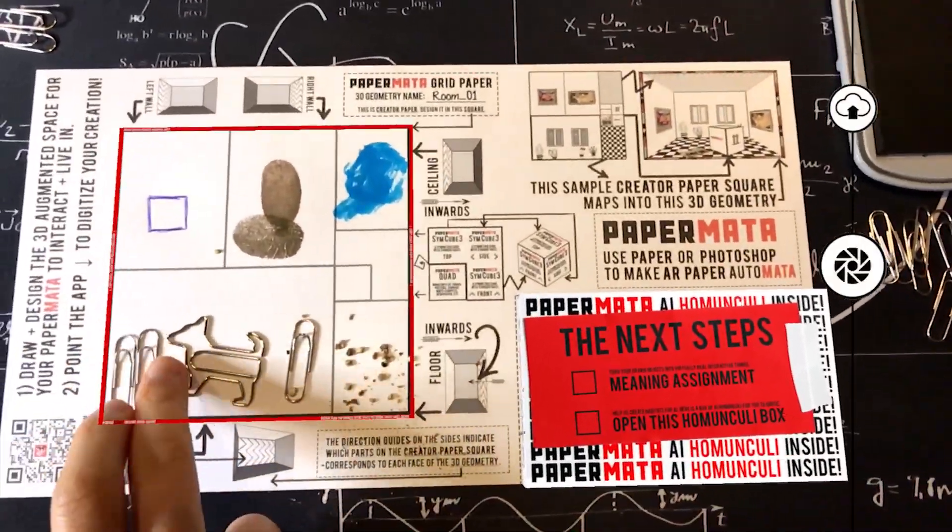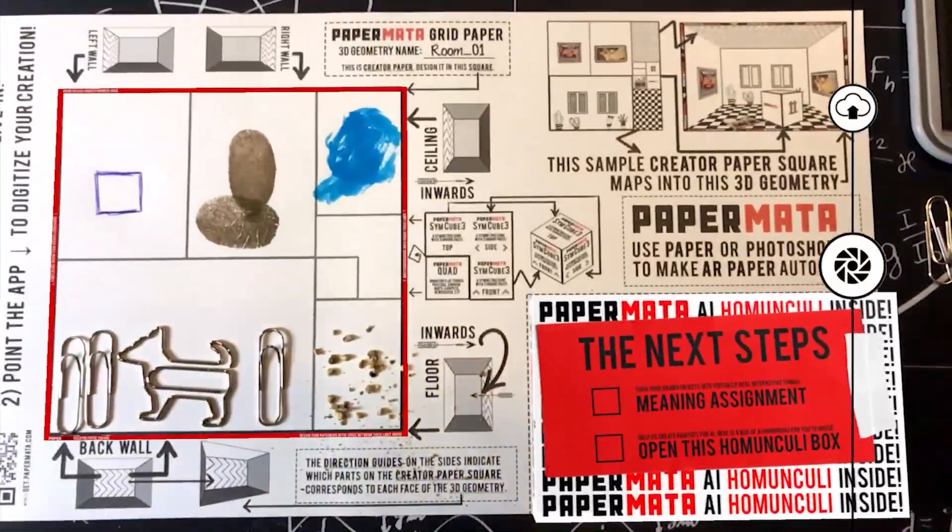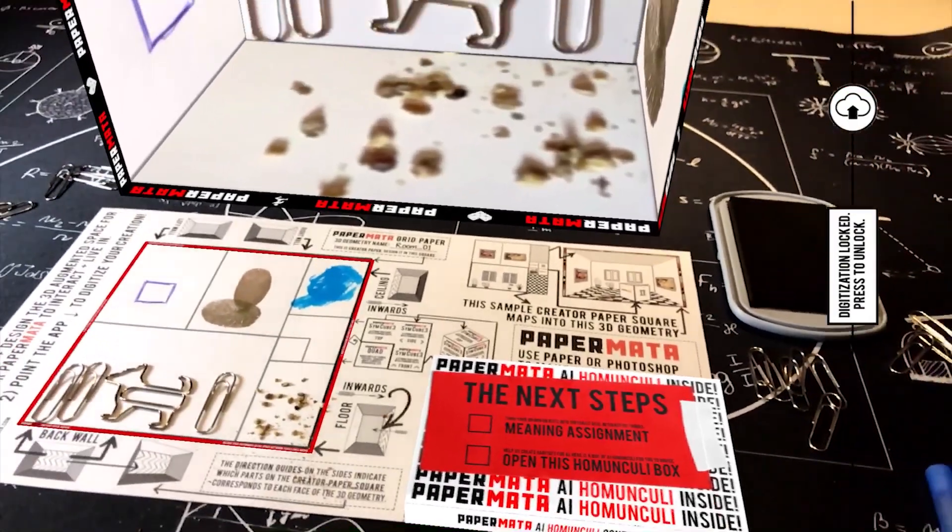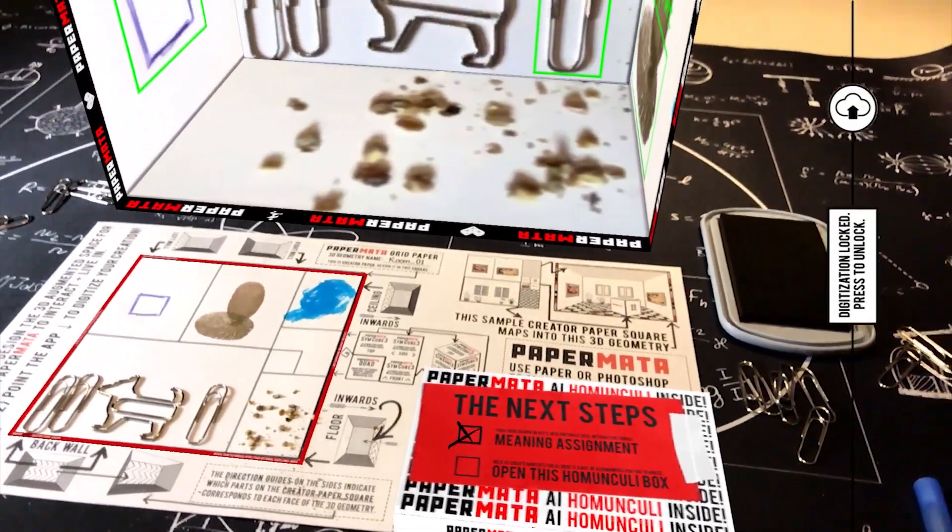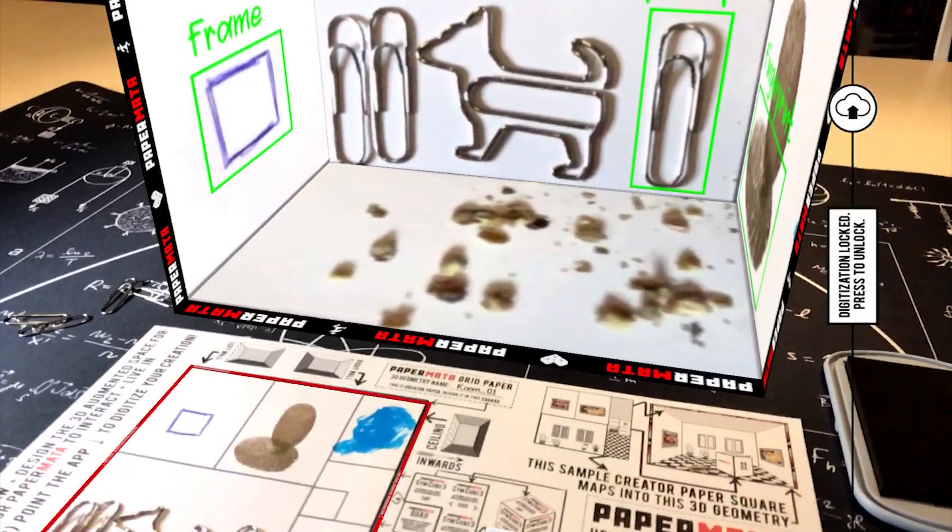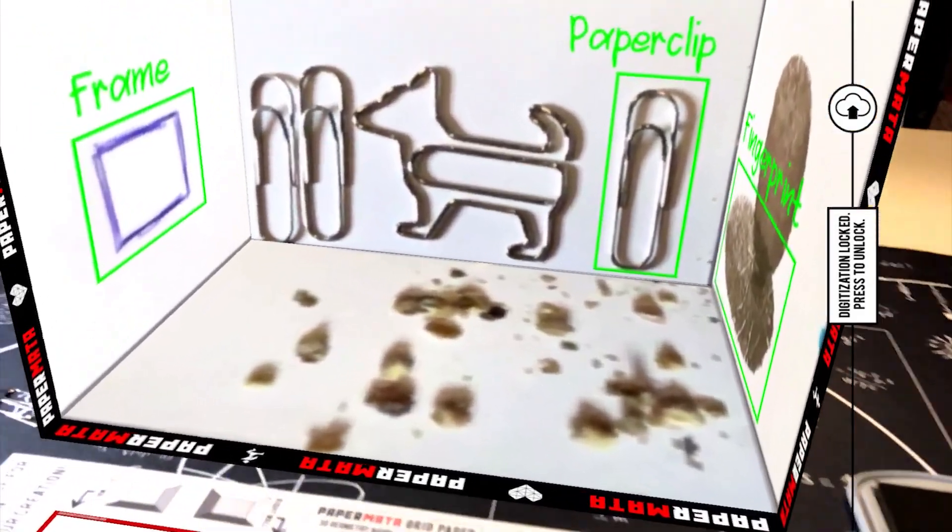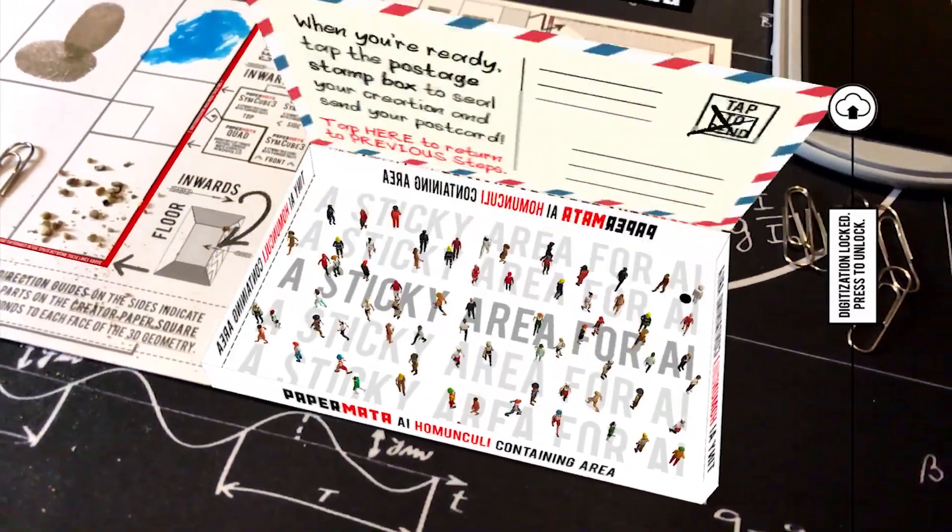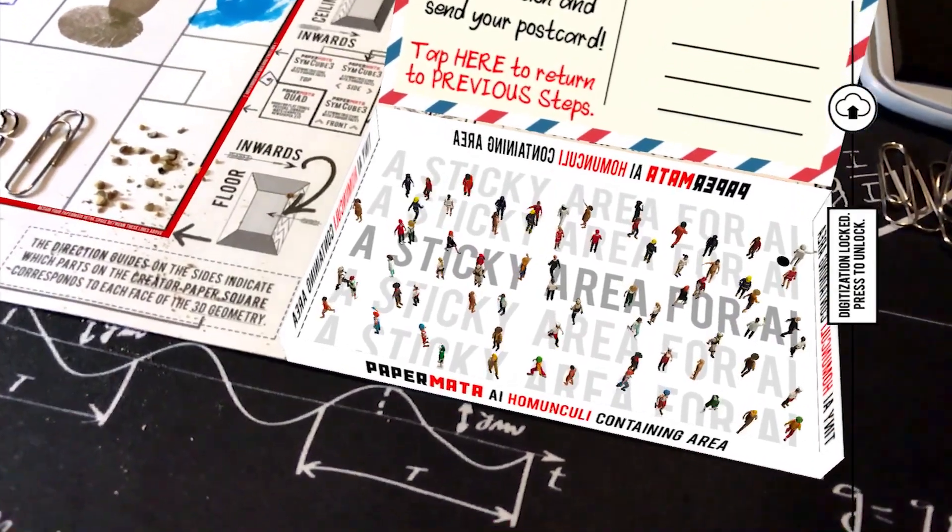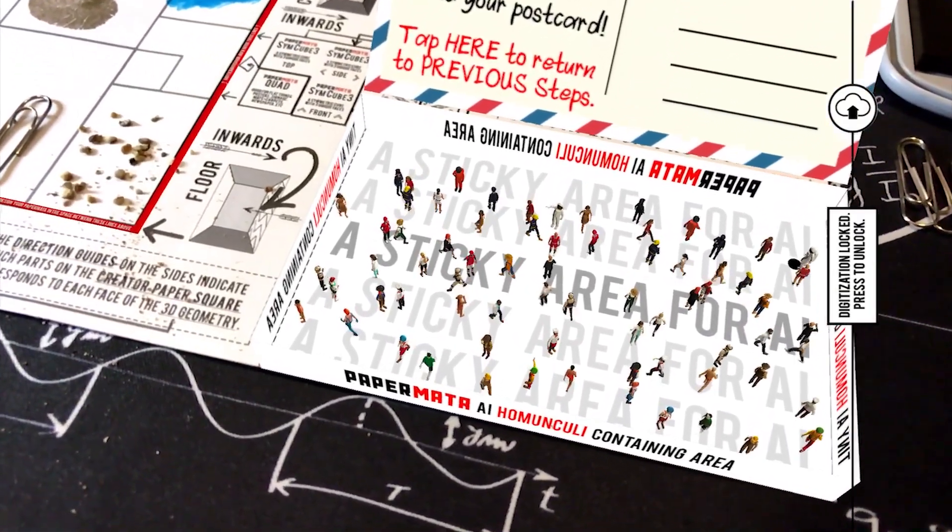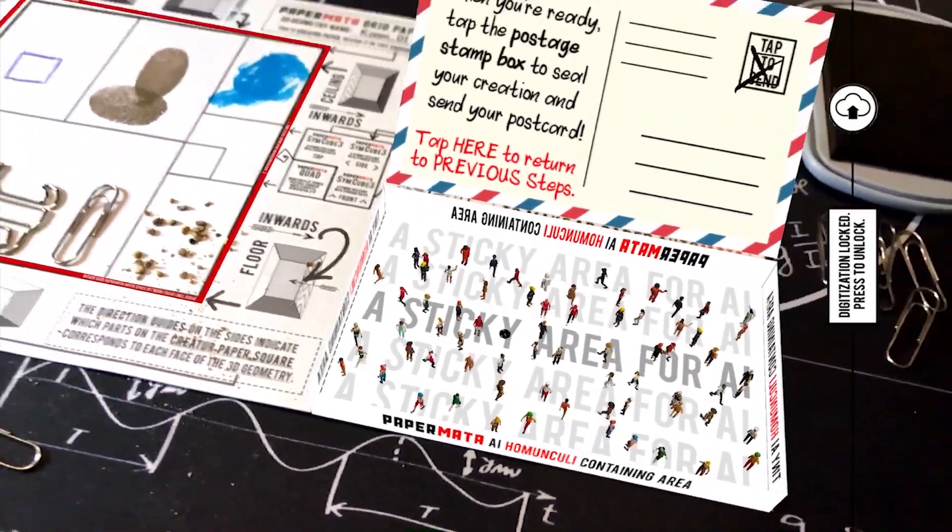Once you're done, the fun begins with the box on the bottom right. Select meaning assignment to identify objects to automatically associate its corresponding mini interaction modules. Open up the box. You can then tap to select the teleport to recruit AI homunculi to live and grow in their own virtual world.